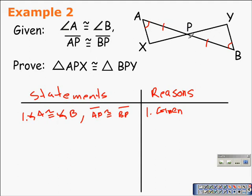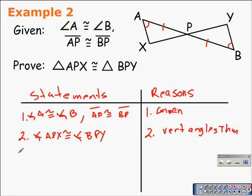are vertical angles, which means they're congruent because they are formed by two intersecting lines. So angle APX is congruent to angle BPY by the vertical angles theorem. Now that we have those two angles marked congruent, we can justify that triangle APX is congruent to triangle BPY by angle-side-angle.